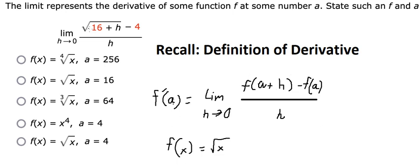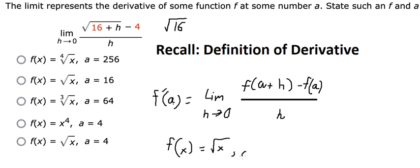In this situation, a should be about number 16 — the square root of number 16. So we can see that f of 16 represents this one too. That means a equals number 16. So we need to select this one. This is the end.